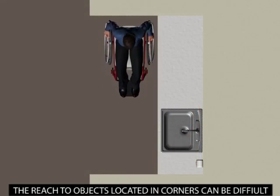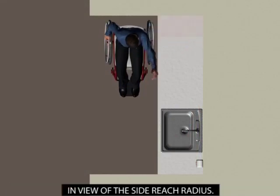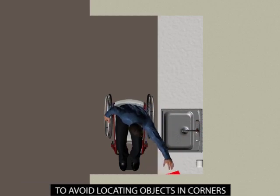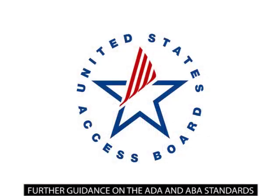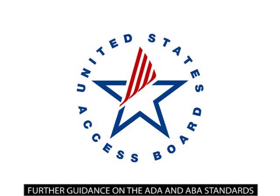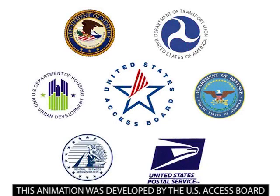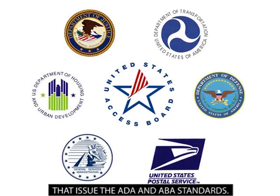The reach to objects located in corners can be difficult because of the side reach radius. It is advisable, though not specifically required in the standards, to avoid locating objects in corners accessed only from a side approach. Further guidance on the ADA and ABA standards is available from the US Access Board. This animation was developed by the US Access Board in cooperation with the federal agencies that issue the ADA and ABA standards.